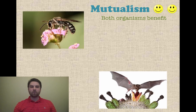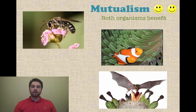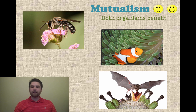An example of mutualism is bats or insects with pollinating flowers. Both the bat and the insects get food or nectar from the flower, but they also cross-pollinate the different flowers, which benefits the flowers. Another example is the sea anemone and the clownfish — just like in Finding Nemo. The sea anemone provides protection, and the clownfish provides cleaning, removing algae and other things from the sea anemone. That's a mutualistic relationship.